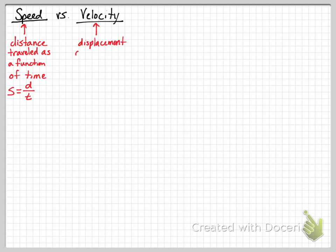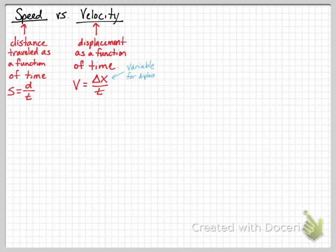Velocity, on the other hand, has displacement in its definition, making it a vector. Velocity is displacement as a function of time, so velocity equals the change in displacement over time. Change in x is typically the variable we use for displacement — it can be change in y as well, or change in any position variable.